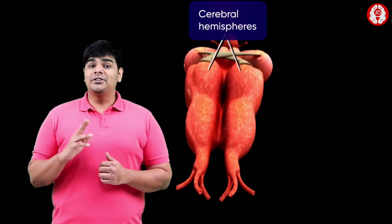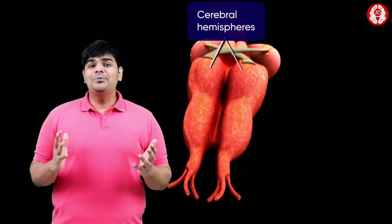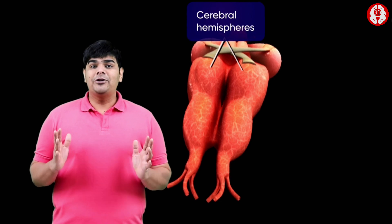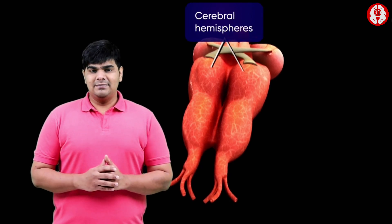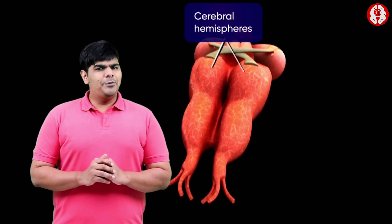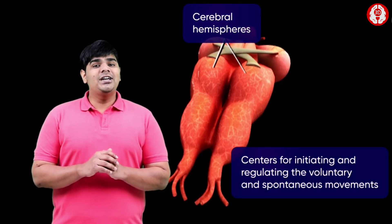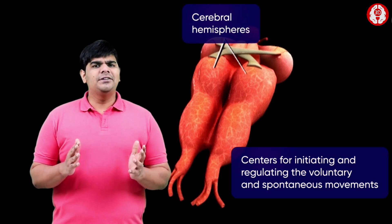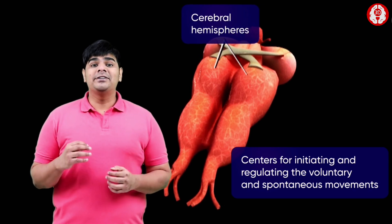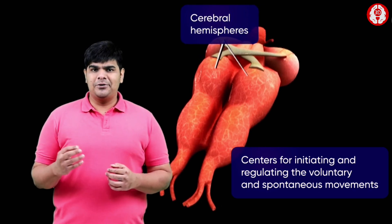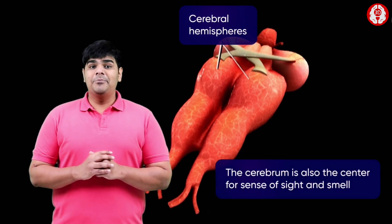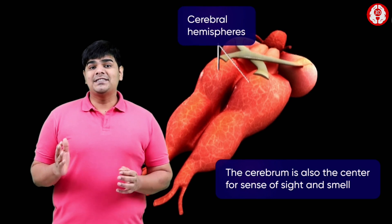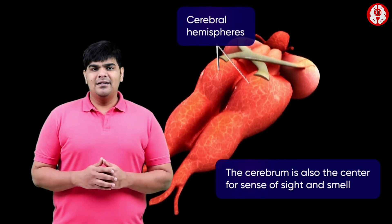Behind the two olfactory lobes, the two cerebral hemispheres are seen connected with each other by transverse bands of nerve fibers. These cerebral hemispheres possess the centers for initiating and regulating voluntary and spontaneous movements in frogs. The cerebrum is also the center for the sense of sight and smell.